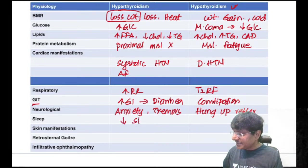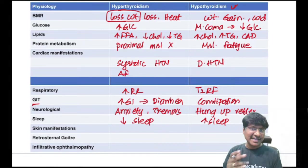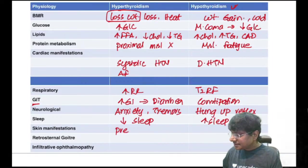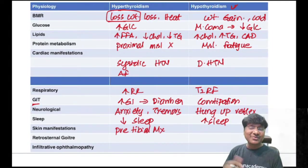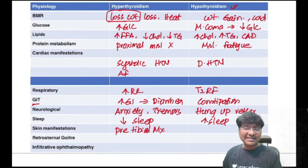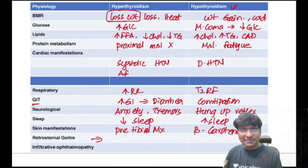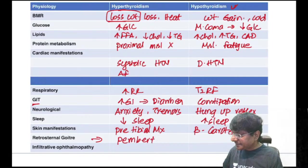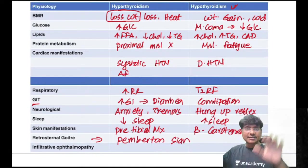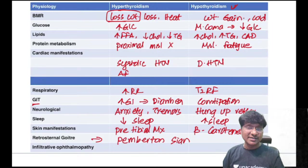Neurological features: hyperthyroidism causes anxiety neurosis and tremors; hypothyroidism causes dullness, lethargy, and hung-up reflex (delayed relaxation of deep tendon reflexes). Sleep: decreased in hyperthyroidism, excessive in hypothyroidism. Skin: hyperthyroidism has pretibial myxedema; hypothyroidism has yellowish skin due to beta-carotenemia. Retrosternal goiter shows Pemberton's sign — facial congestion and arm redness on raising the arm.